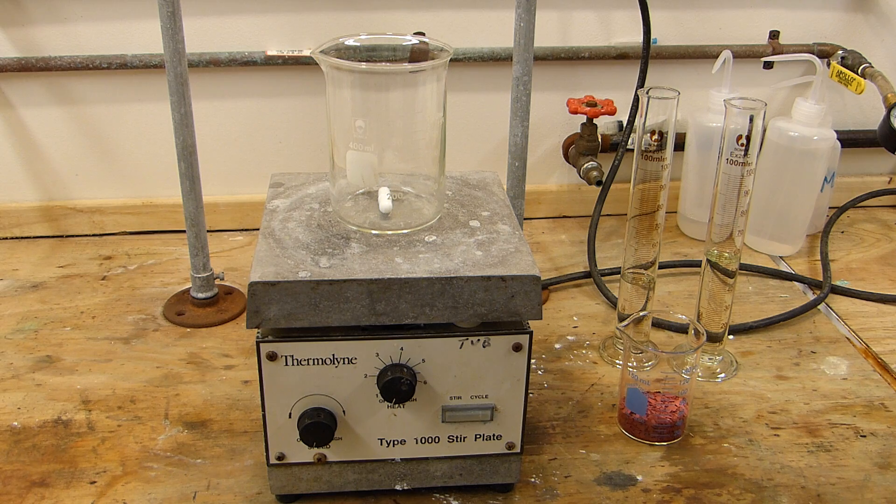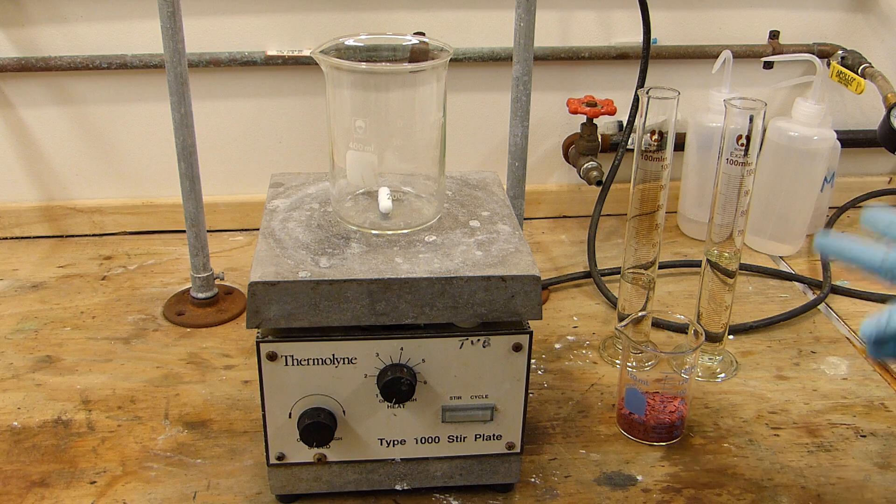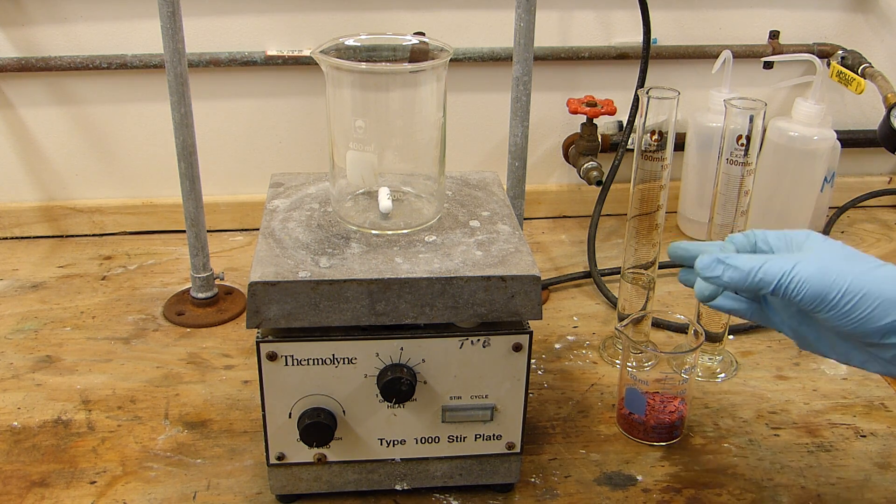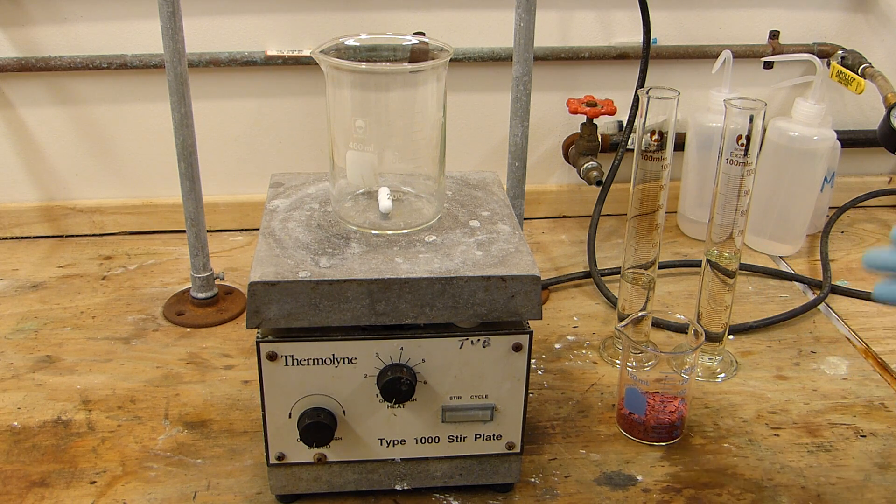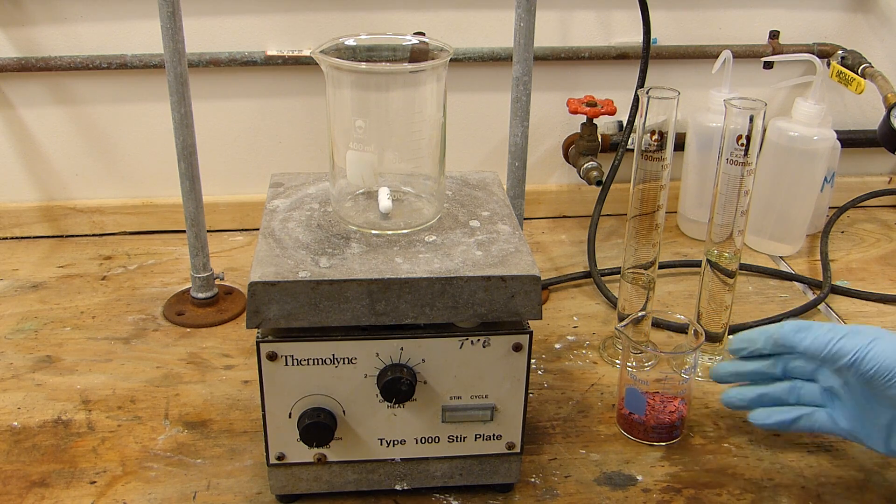To begin we'll prepare the solution of chlorochromic acid by mixing hydrochloric acid and some chromium trioxide. Now I have hydrochloric acid but it's a little too concentrated for this application so I've got enough water here to dilute it down to six molar and that'll be a total of 184 milliliters of six molar HCl when those two are mixed together.